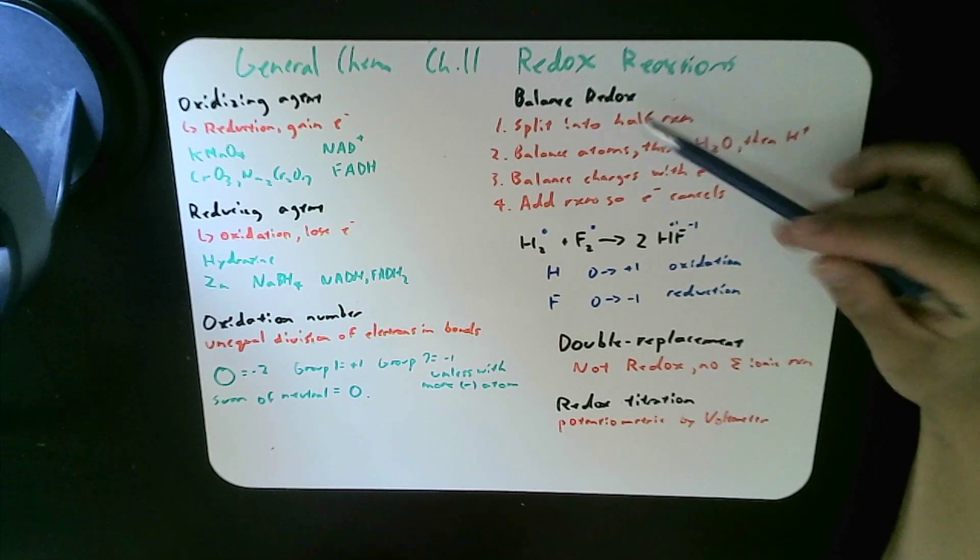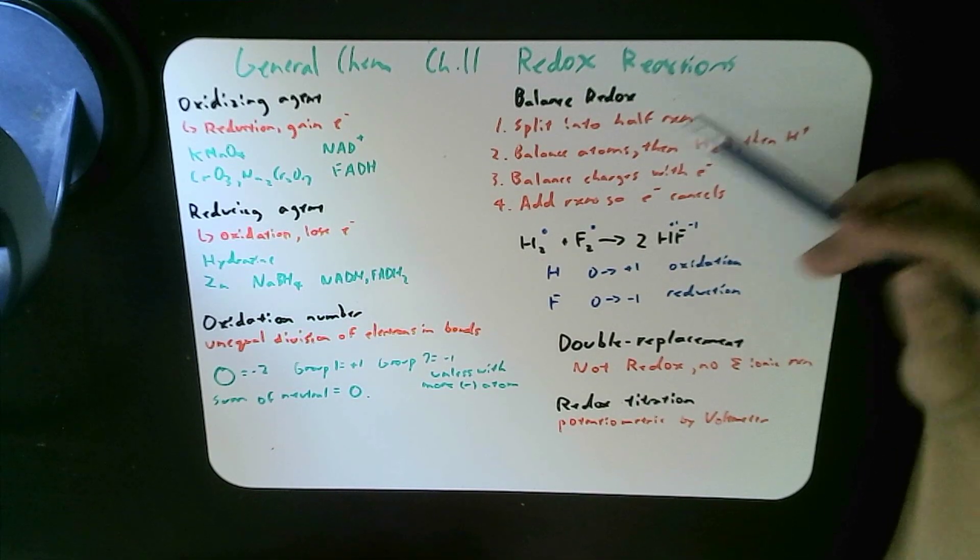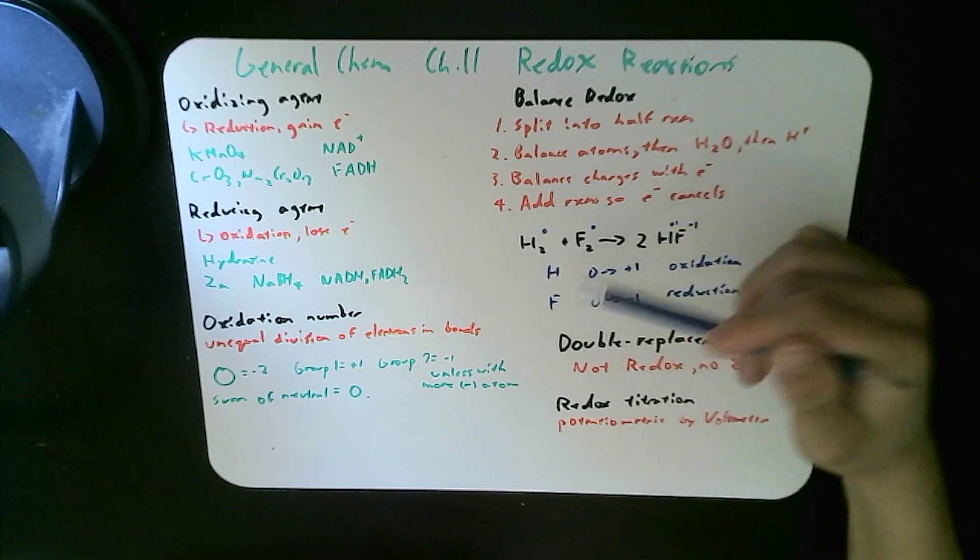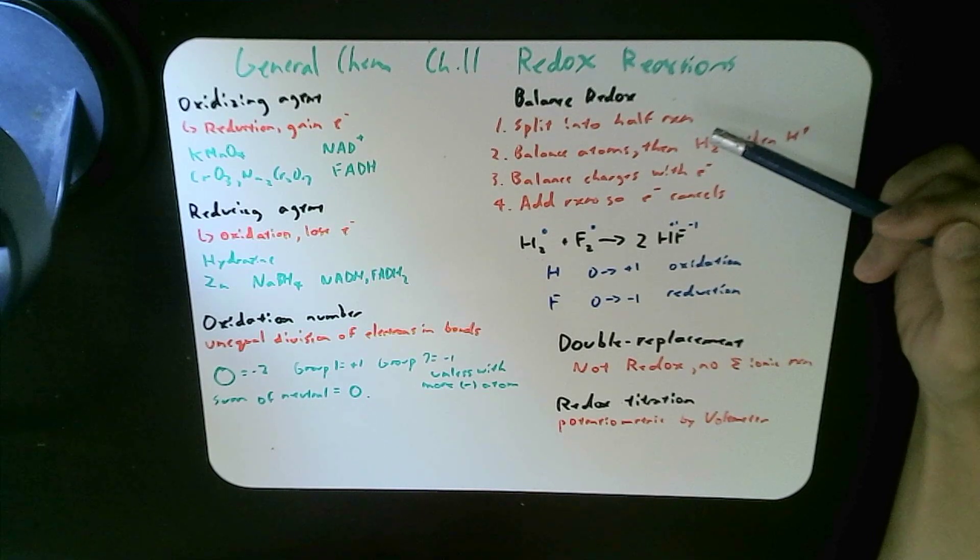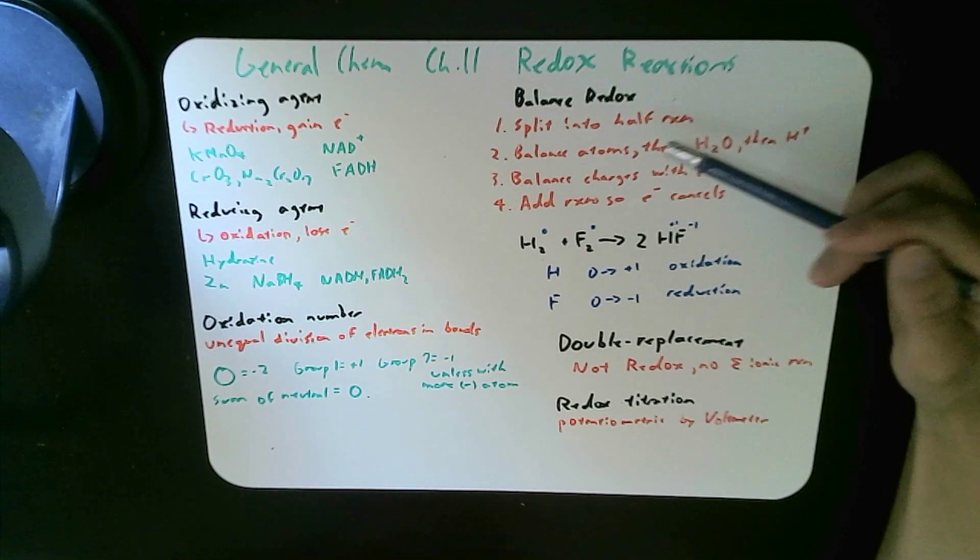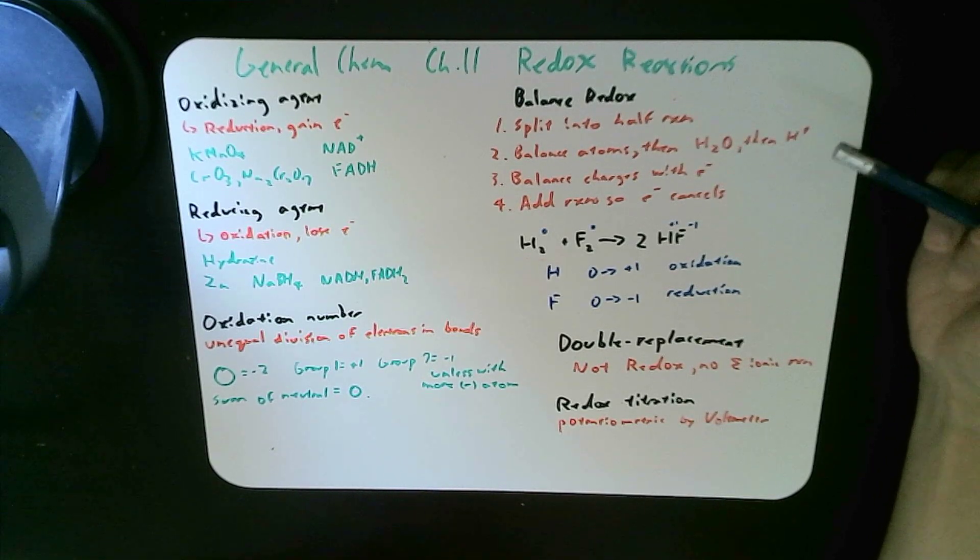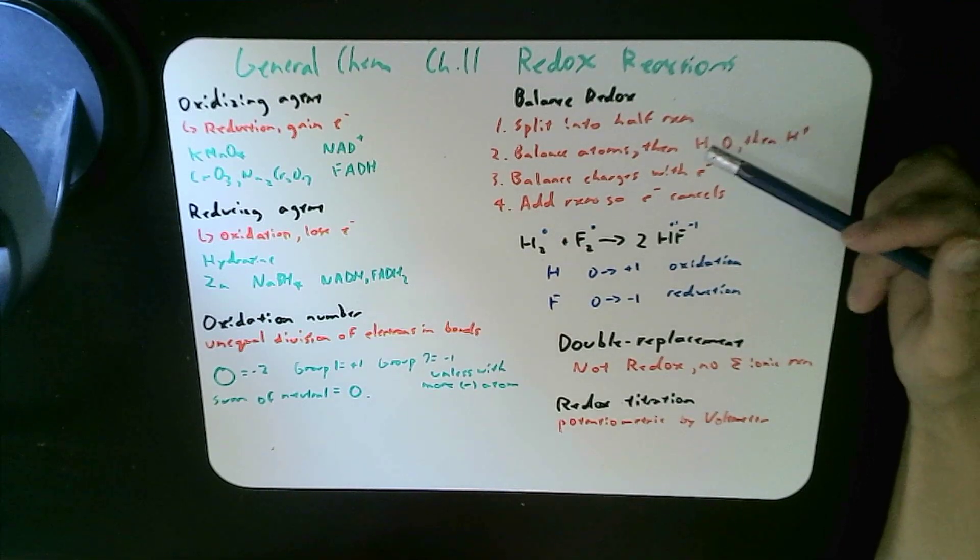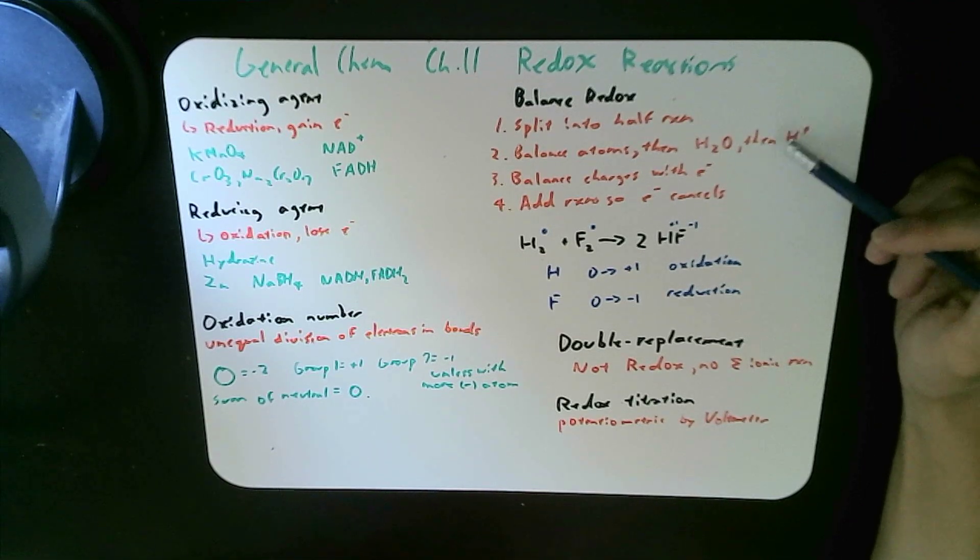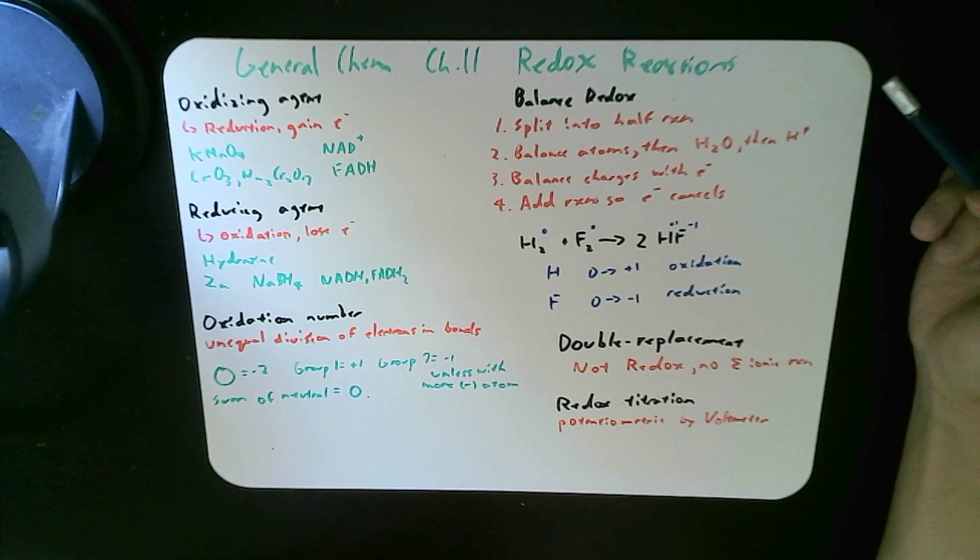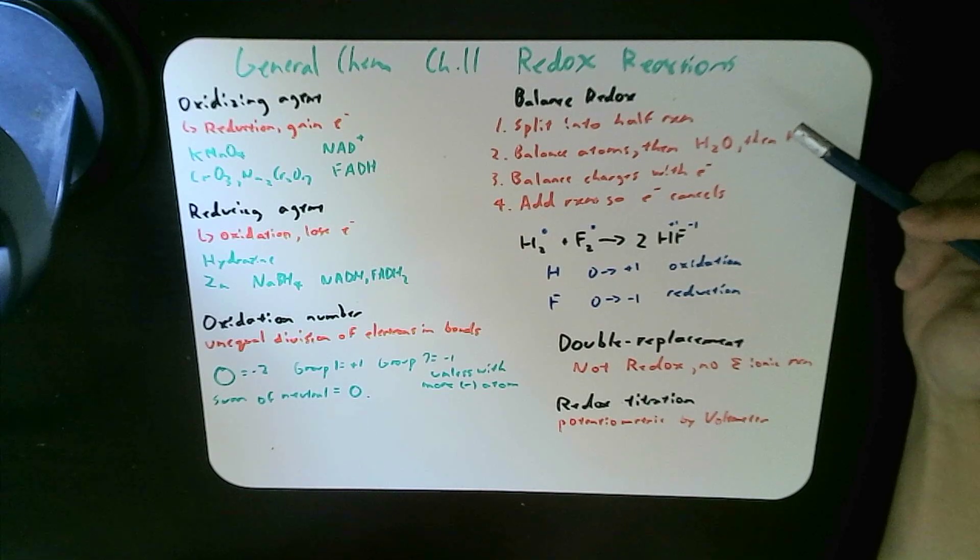To balance a redox reaction, we have the entire reaction, right? And you can split it up into two parts. First you split into the half reactions, and you balance the atoms that are not oxygen or hydrogen, and then you can add H2O to the side that needs to balance it, and then the protons H to counteract the H.